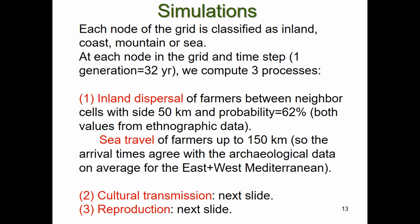All other grid cells are initially occupied by hunter-gatherers at saturation density. Each node is classified as inland, coast, mountain, or other ecology. At each time step of one generation, we compute three processes: first, inland dispersal of farmers between adjacent cells with a step size of 60 km and probability 62 percent, both from ethnographic data; and sea travel of farmers at 200–100 km so that arrival times match archaeological data on average for the eastern and western Mediterranean.